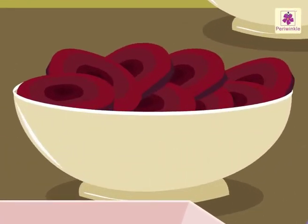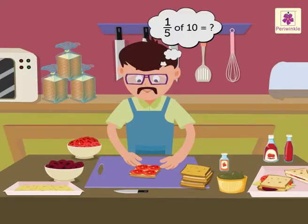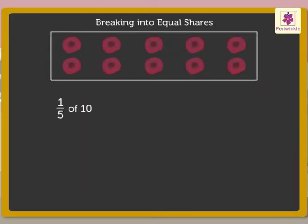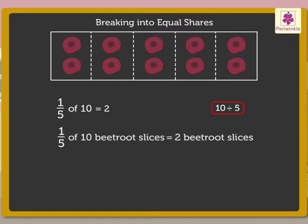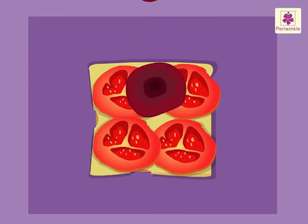Now he is putting beetroot slices in the sandwich. There are 10 slices of beetroot. This time he uses 1 fifth of the beetroot slices in the sandwich. So to find 1 fifth of 10, we make 5 equal groups. That is, we divide 10 by 5 which is equal to 2. Hence, 1 fifth of 10 is 2. So Uncle Sam used 2 slices of beetroot.